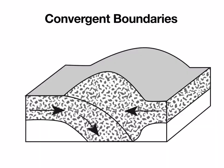The next type of plate boundary would be convergent boundaries. These are a little more tricky because we have to consider not only the fact that two plates are coming together and colliding, but what type of crust is involved. We see different things happening when it's oceanic crust colliding with oceanic crust as opposed to continental colliding with continental. So we have a few different types of convergent boundaries.